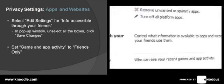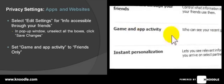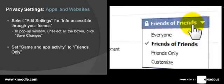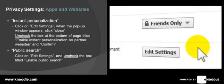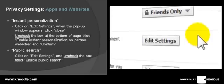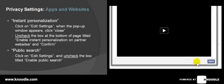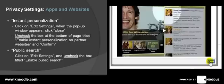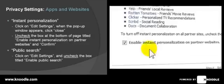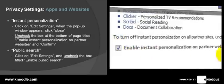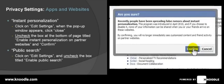Moving down to 'Game and App Activity,' we're going to change that from 'Friends of Friends' to 'Friends Only.' The next section is 'Instant Personalisation,' which deals with third-party websites — click on 'Edit Settings.' There's a video you can watch if you like; click close when done. Uncheck the option to enable instant personalisation on partner websites. It will ask you to confirm — click yes.